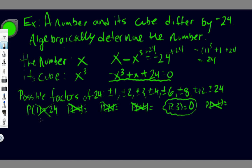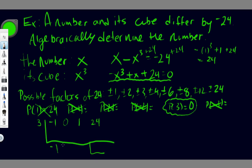Once you've found that x equals 3 is a root, we need to check if there are more solutions. We synthetically divide by x minus 3, using 3. The coefficients are negative 1, 0 (no x squared term), 1, and 24. Bringing down negative 1, then 3 times negative 1 is negative 3; 1 plus negative 3 is negative 3. Then negative 3 times 3 is negative 9; 1 plus negative 9 is negative 8. Then negative 8 times 3 is negative 24; 24 plus negative 24 gives 0. So x equals 3 is confirmed as a factor.